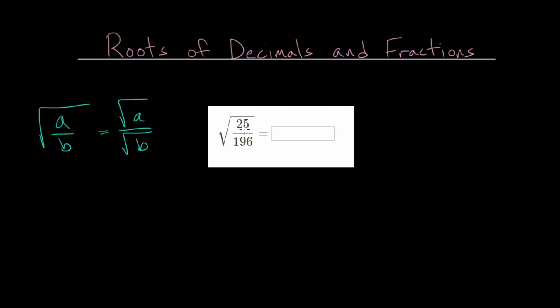So let's apply this principle to this particular problem. So I'll rewrite it. We have the square root of 25 over 196. And like I mentioned, we can just take the square root of the top, square root of 25, and divide it by the square root of 196.